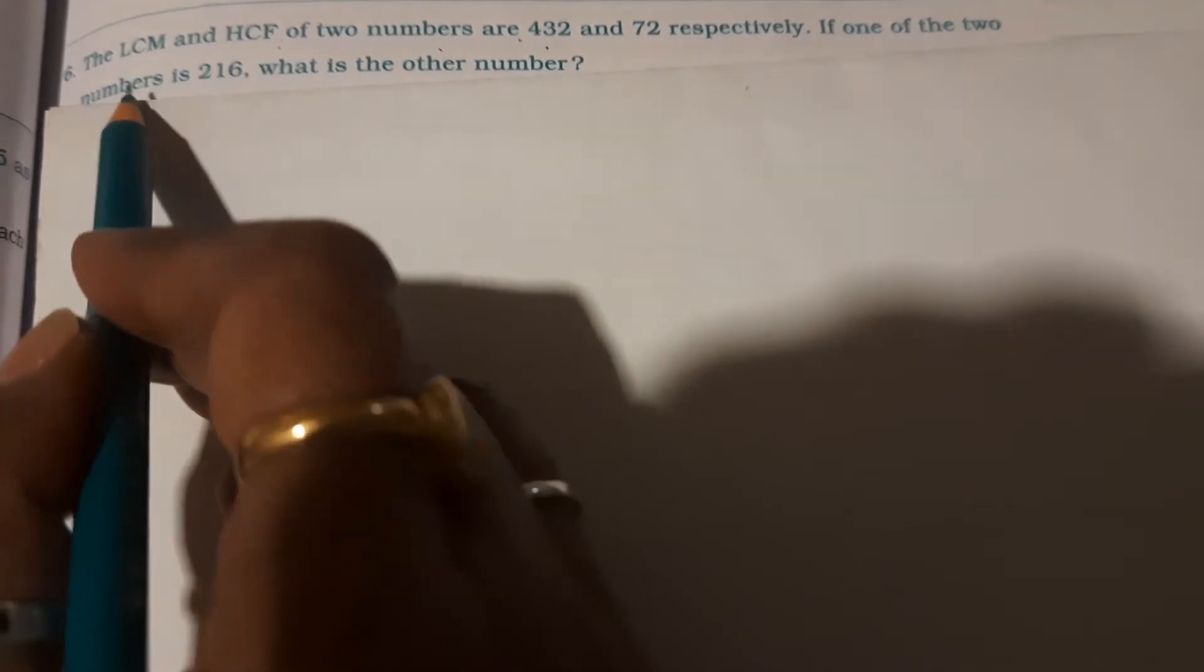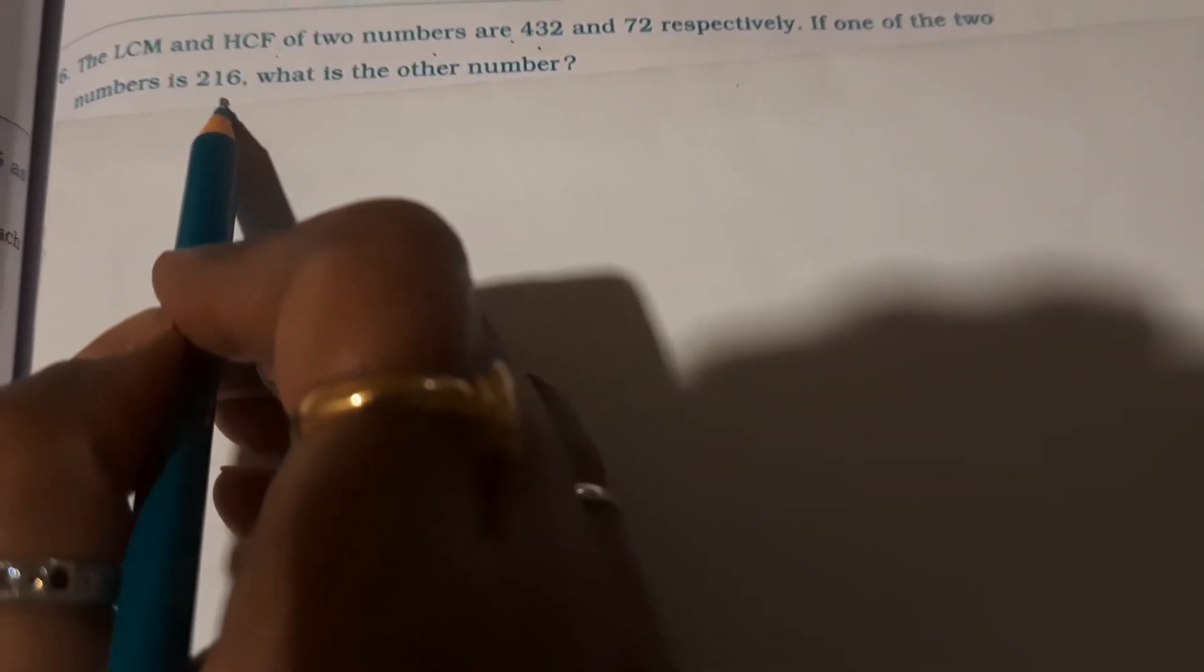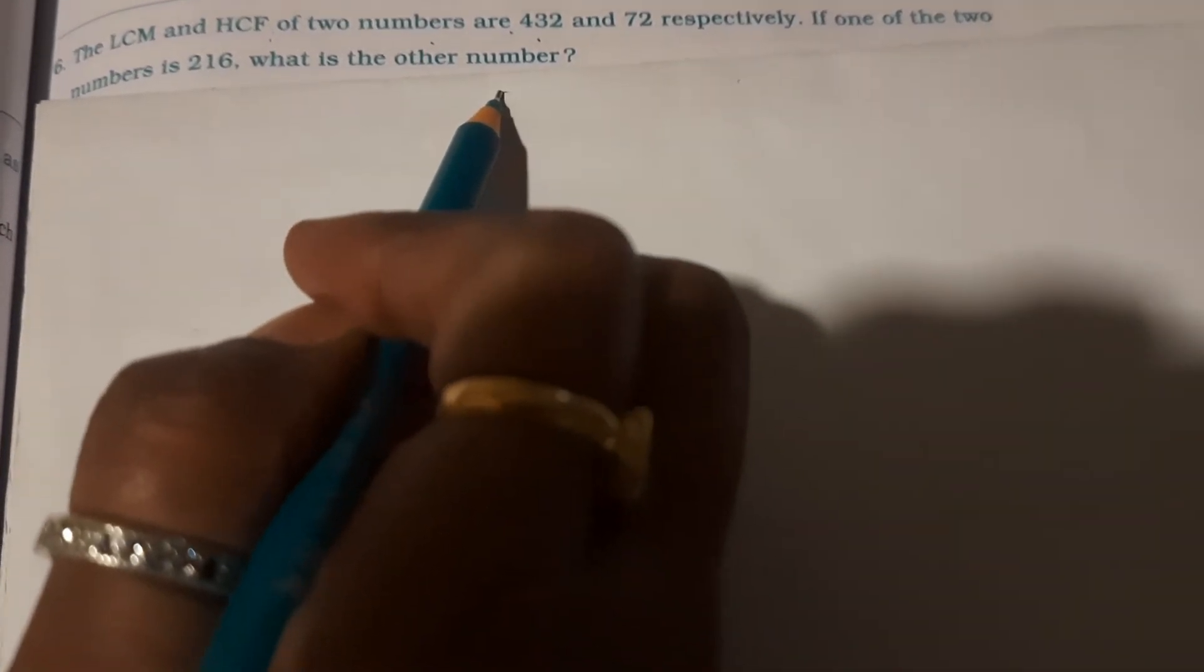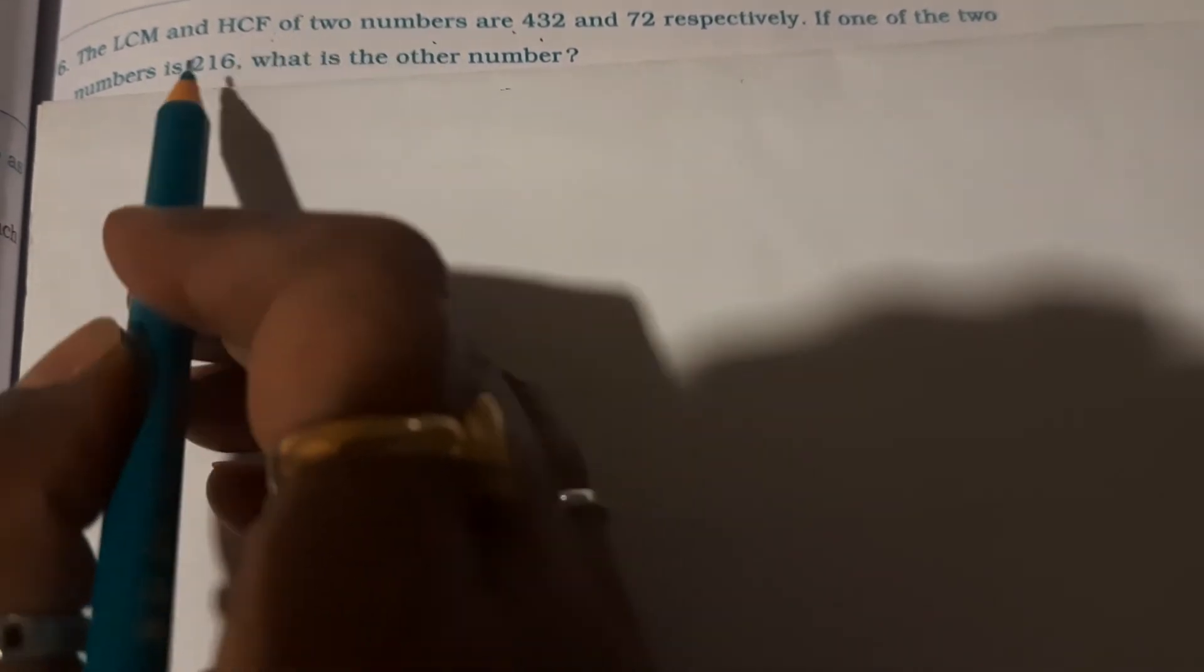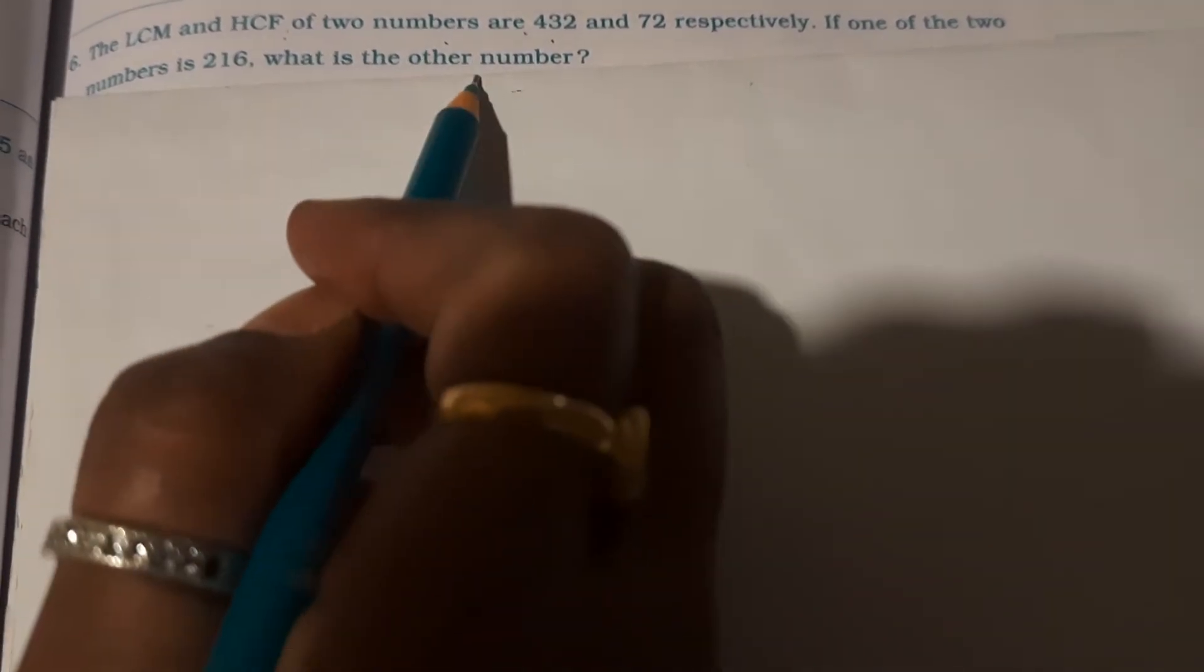If one of the two numbers is 216, what is the other number? So if one number is 216, what is the other number? So how do we find out?